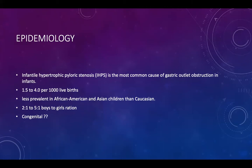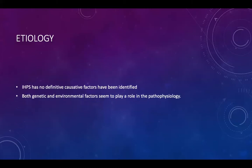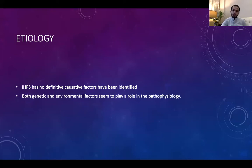Is pyloric stenosis congenital? Studies collecting over 1,000 upper GI studies done on neonates for different reasons showed no evidence of pyloric stenosis. However, some of those patients later developed pyloric stenosis, indicating it is not congenital. The same was confirmed by ultrasound studies on over 1,400 babies. So it is mainly acquired, which is why the terminology has shifted from congenital hypertrophic pyloric stenosis to infantile hypertrophic pyloric stenosis. There is no definitive cause, but genetic and environmental factors may play a role.